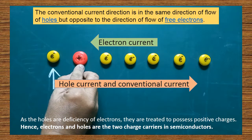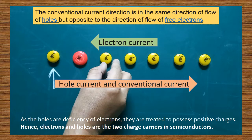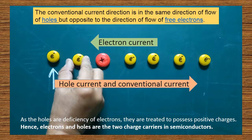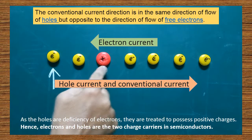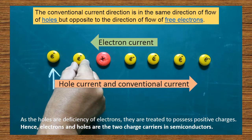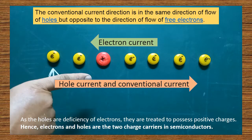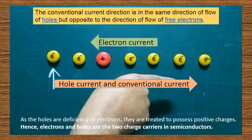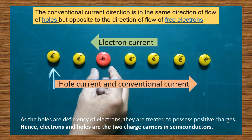Now the hole is here. The electron comes and occupies the place of the hole. Look at the movement of the hole — previously the hole was here, now the hole is here. The electron, previously it was here, now it is shifted here. It is moving in this direction. So the electron movement takes place in this direction, and the hole moves in the opposite direction. This is the direction of hole current and this is the direction of electron current. Both are taking place in the opposite direction.